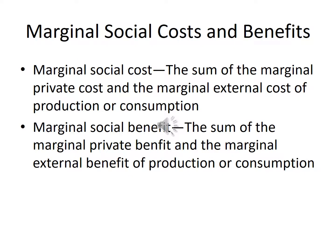Marginal Social Costs and Benefits. Marginal Social Cost: the sum of the marginal private cost and the marginal external cost of production or consumption. Marginal Social Benefit: the sum of the marginal private benefit and the marginal external benefit of production or consumption.